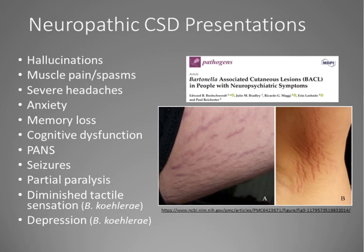Importantly, there are also neuropathic cat scratch disease presentations. Bartonella-associated cutaneous lesions were noted in people with neuropsychiatric symptoms. In the study cited, 29 of 33 patients with acute-onset neuropsychiatric syndromes and concurrent lesions had positive serology or PCR for Bartonella. Also associated with cat scratch disease are hallucinations, muscle pains and spasms, severe headaches, anxiety, memory loss, cognitive dysfunction, PANS (pediatric acute neuropsychiatric syndrome), seizures, partial paralysis, diminished tactile sensation, and depression, the latter two associated with Bartonella choloraemiae identified in humans.